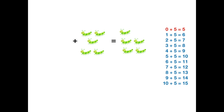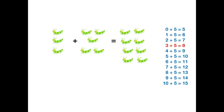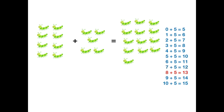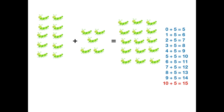Adding 5 to a number. 8 plus 5 equals 13. 9 plus 5 equals 14. 10 plus 5 equals 15. And we are all done! Now that you know your addition table, can you sing with me?